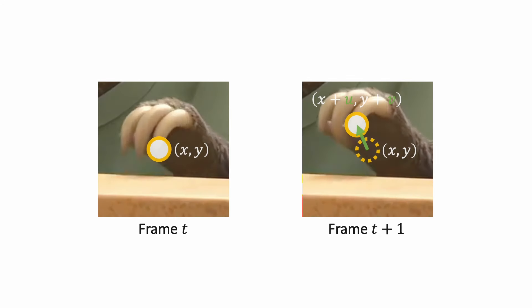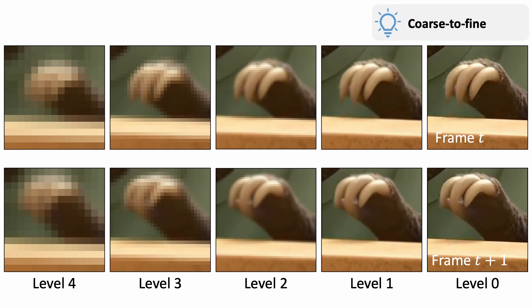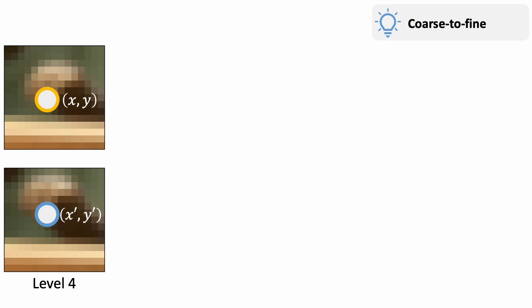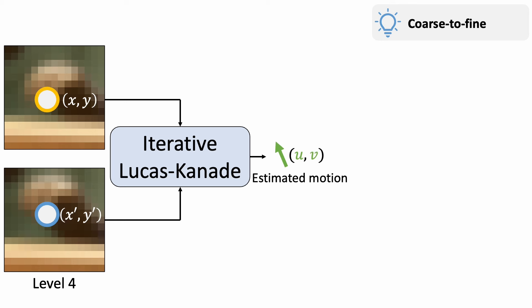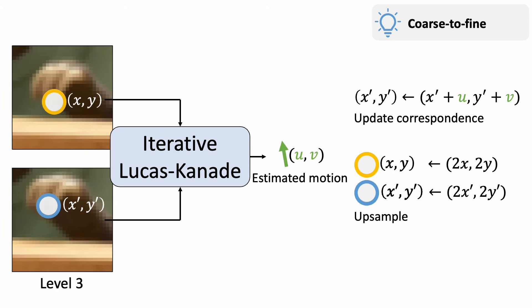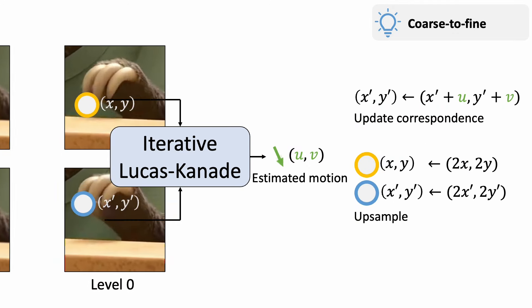This is nice, but still not sufficient to handle large motions. We need a second idea, coarse-to-fine search. We build a Gaussian pyramid of multiple levels for each image. A large motion in the original resolution is now a tiny motion in low-resolution images. We start with the lowest image resolution, and estimate the motion using the iterative Lucas-Kanade algorithm. We can update the correspondence using the estimated motion, and upscale them to the next level. This provides an accurate initialization for the next level. We repeat this process until we reach the original image resolution.